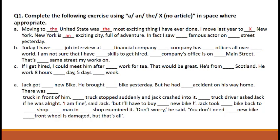'In fact, I saw ___ famous actor on ___ street yesterday.' Which articles will come in these blanks? 'A' will come before 'famous actor' as indefinite article 'a' is used before a singular noun. In the second blank, 'the' will come before 'street' because the definite article 'the' is used when we define or identify a particular person or object.